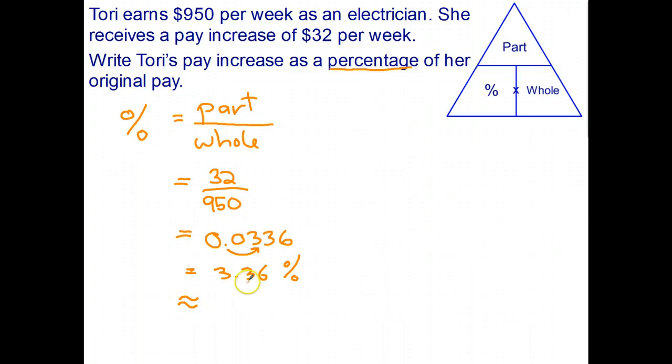And I want to round it to one decimal place. So I'll look at the second decimal place. Because that's five or bigger, the three becomes a four. And that becomes 3.4 percent rounded to one decimal place. So notice I had to keep four decimal places here to round to one decimal place in my final answer.